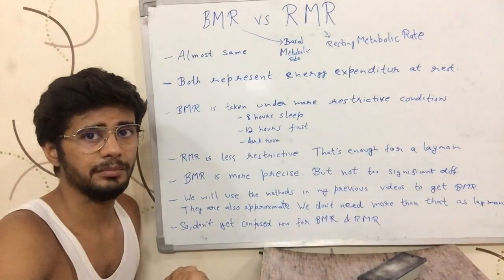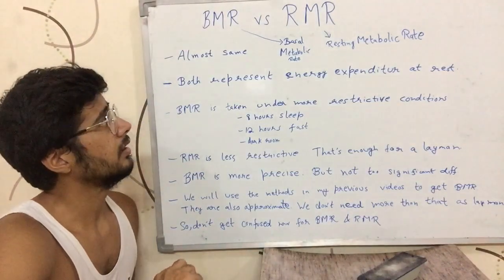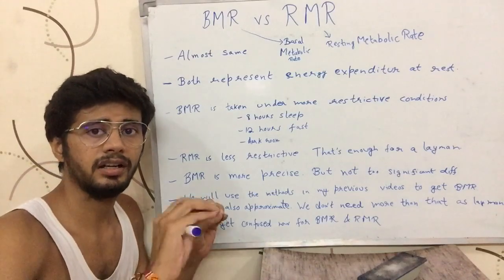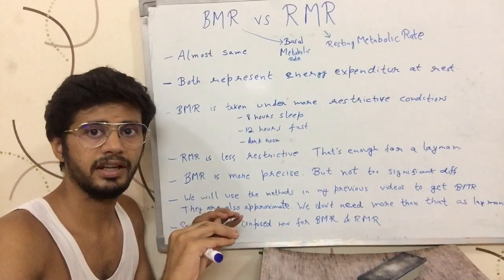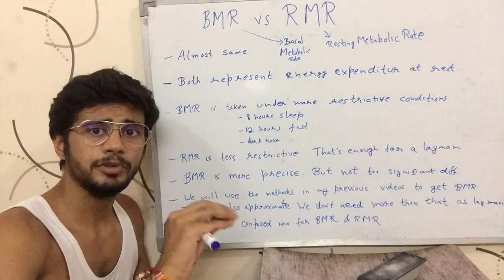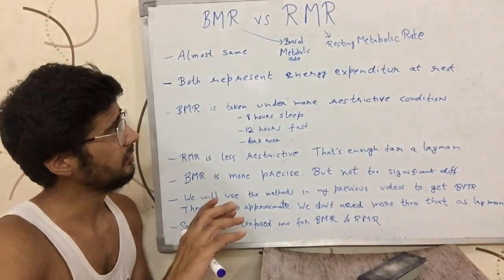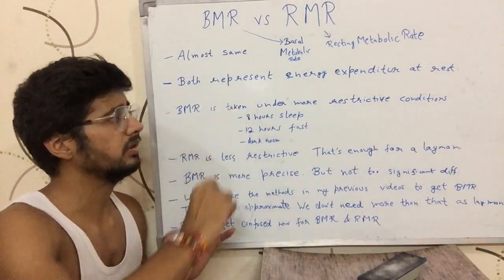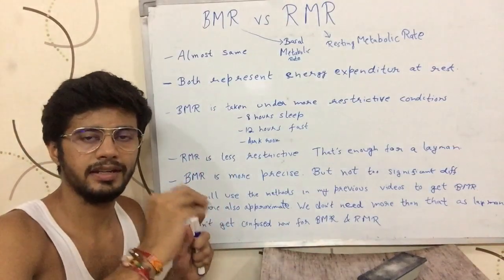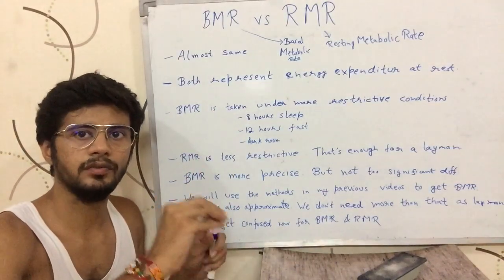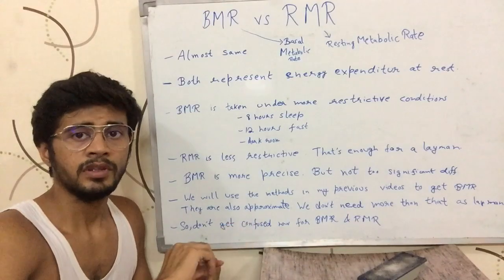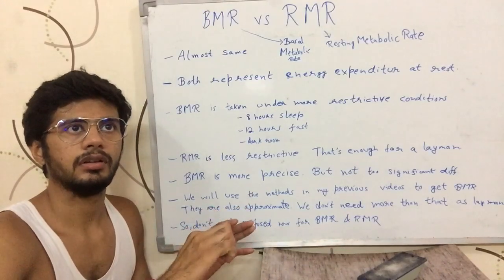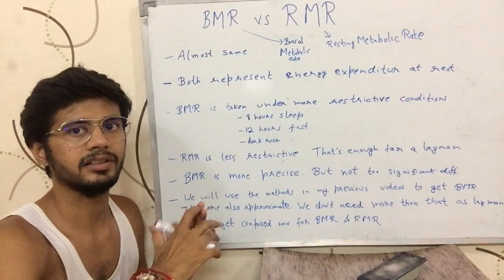They are almost the same thing, but you might have come across BMR and RMR on the internet. They are many times used interchangeably. They both represent the energy that your body burns when you are at rest — when you are lying down on your bed.